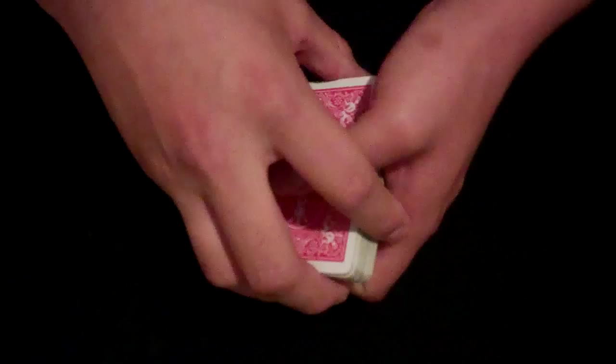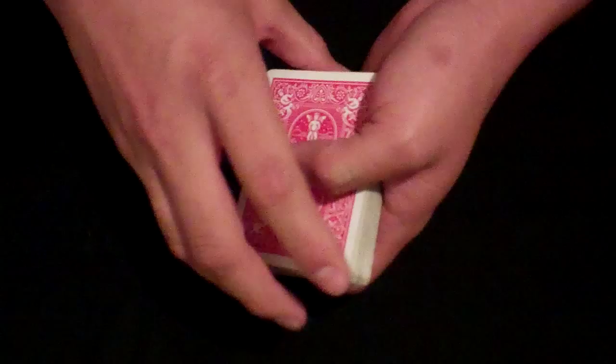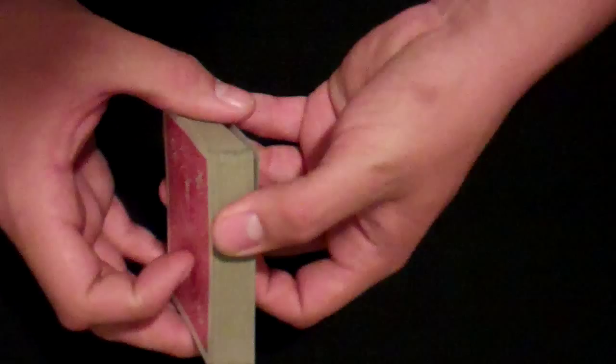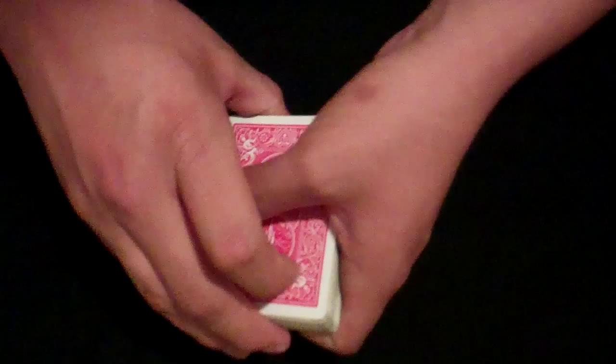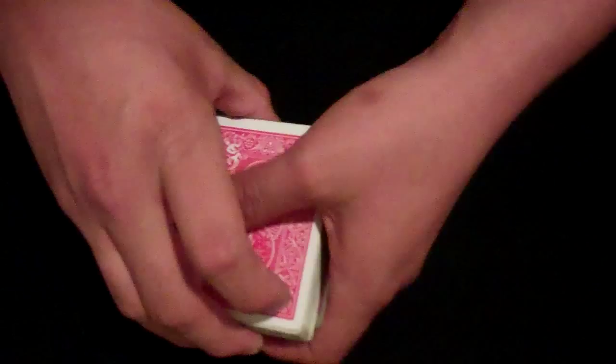Alright, let me show you how that's done. You want the aces in red, black, red, black order. Set them on top of the pack. Alright, catch a break on the bottom card, or yeah, thumb break.